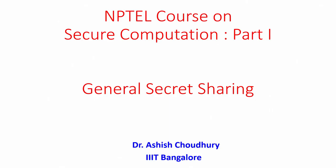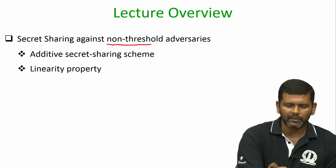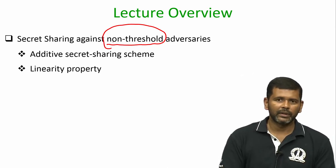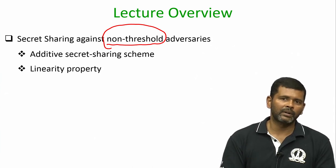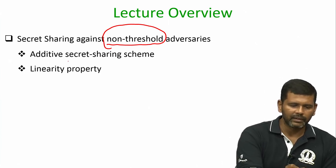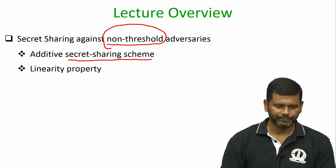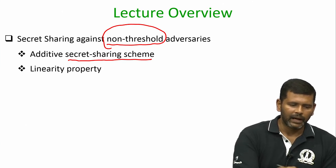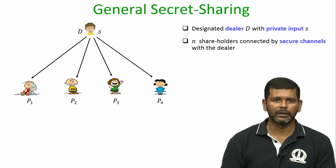Hello everyone, welcome to this lecture. In this lecture we will see general secret sharing schemes, namely secret sharing schemes against non-threshold adversaries. By non-threshold adversaries I mean where the cardinality of forbidden sets in the adversary structure need not be upper bounded by some specific threshold, unlike threshold secret sharing. We will see an additive secret sharing scheme adapted for non-threshold adversaries, and the resultant scheme satisfies the linearity property.